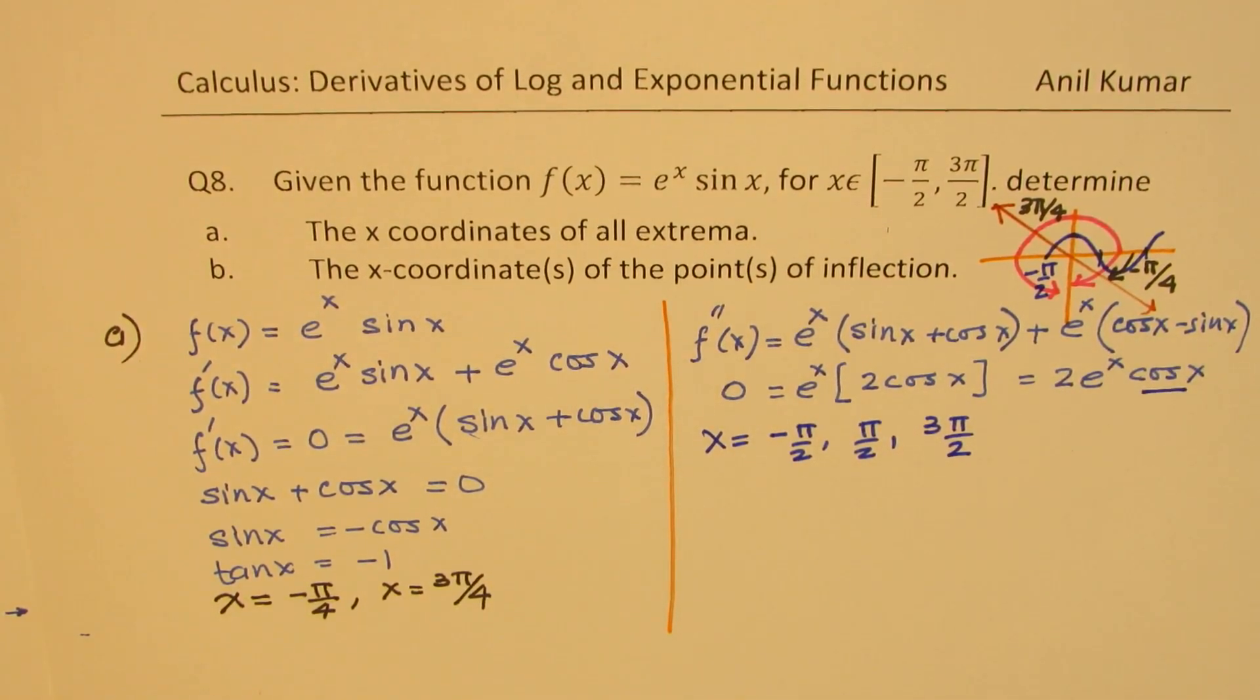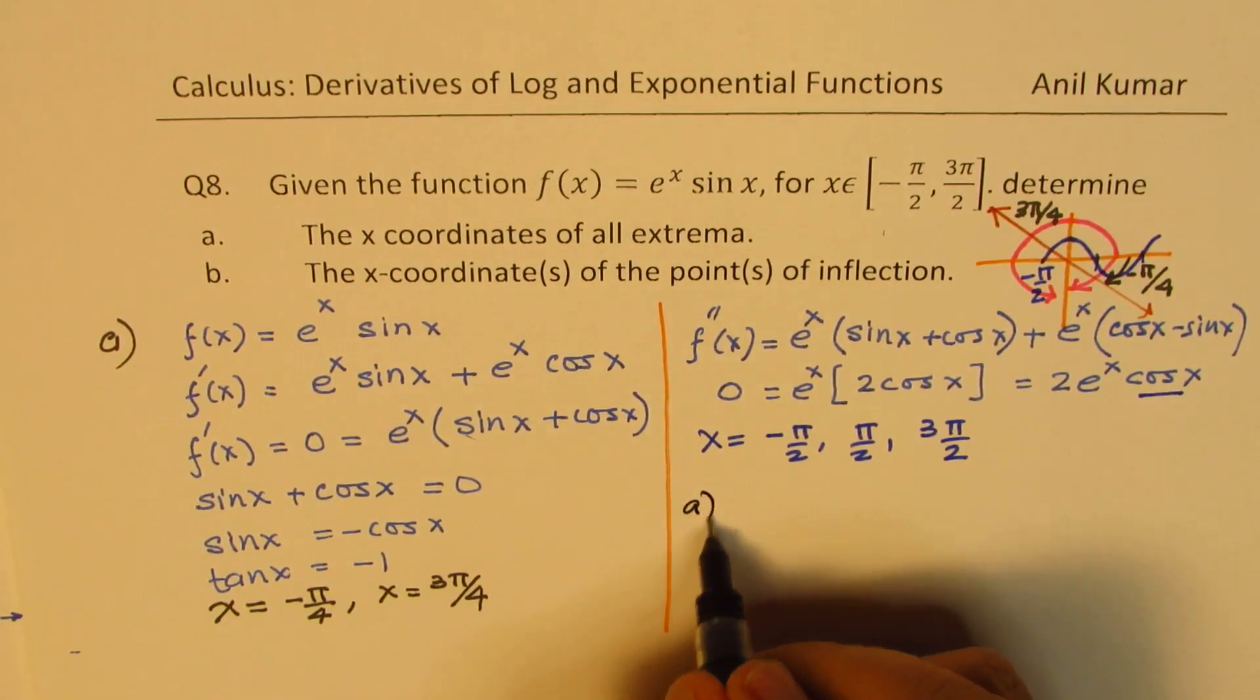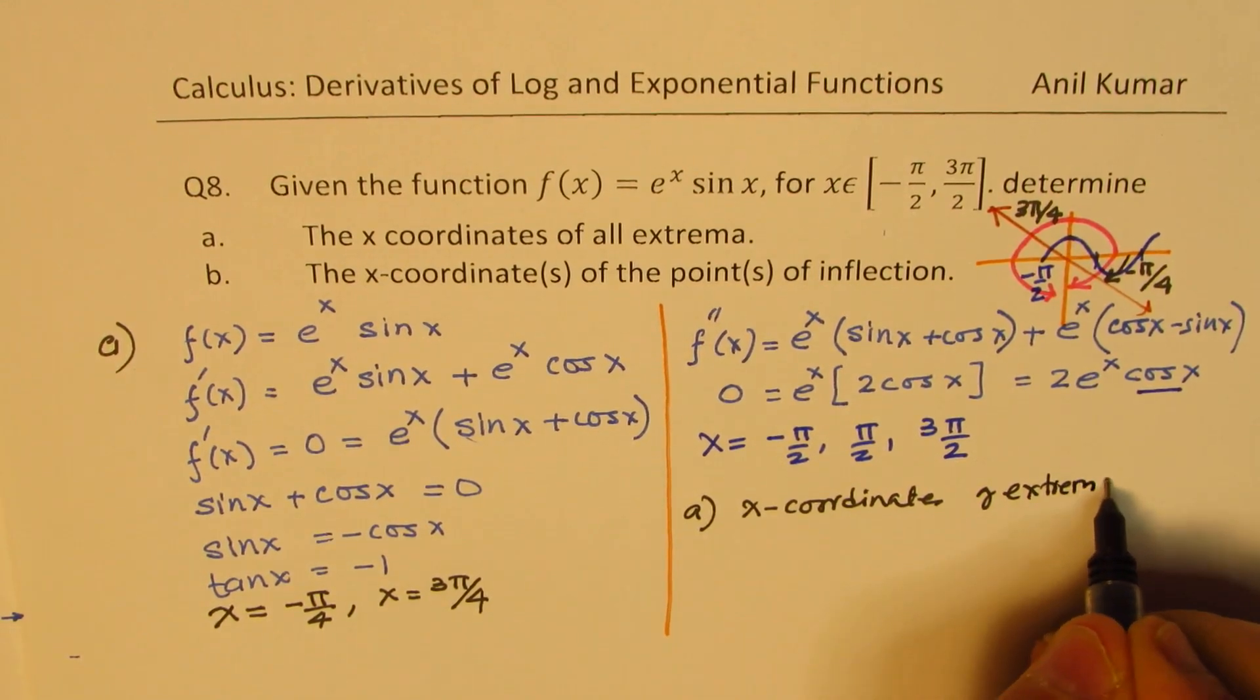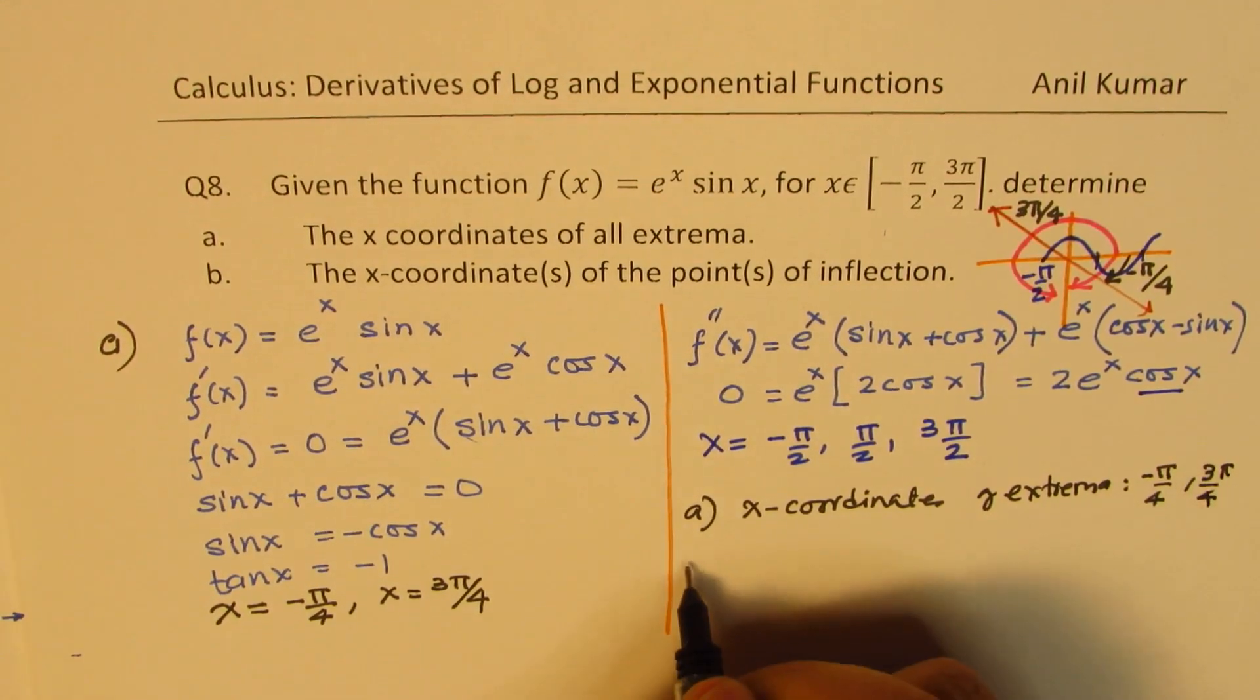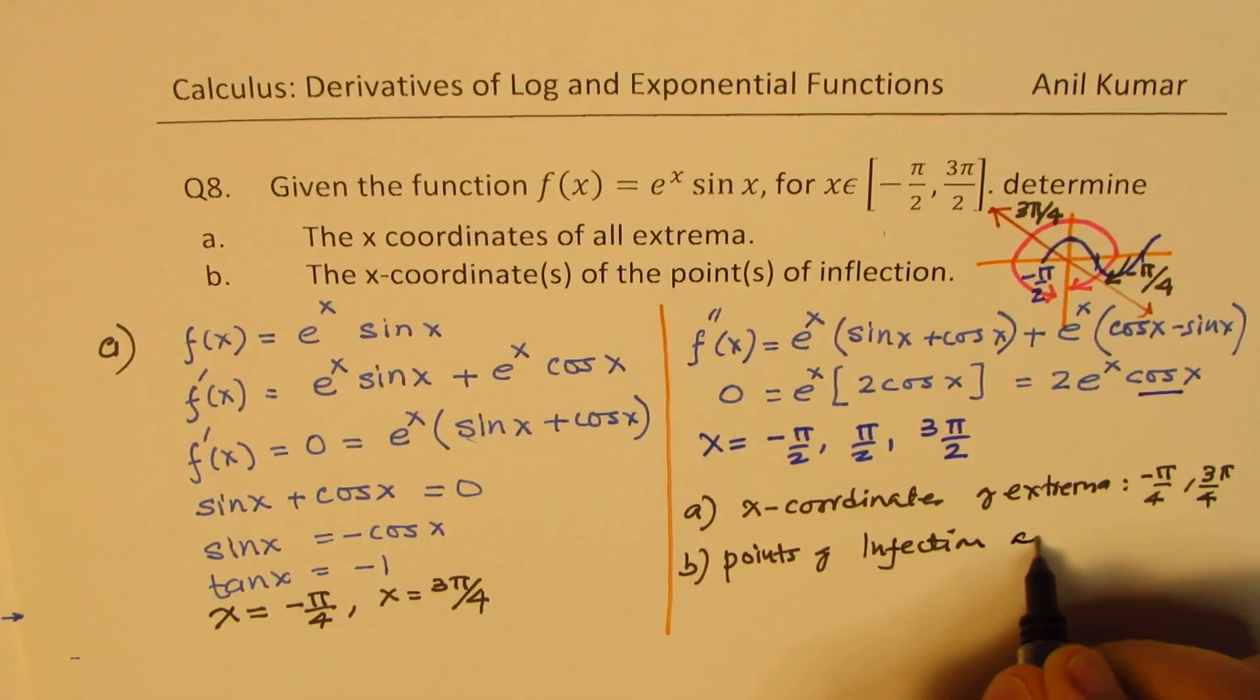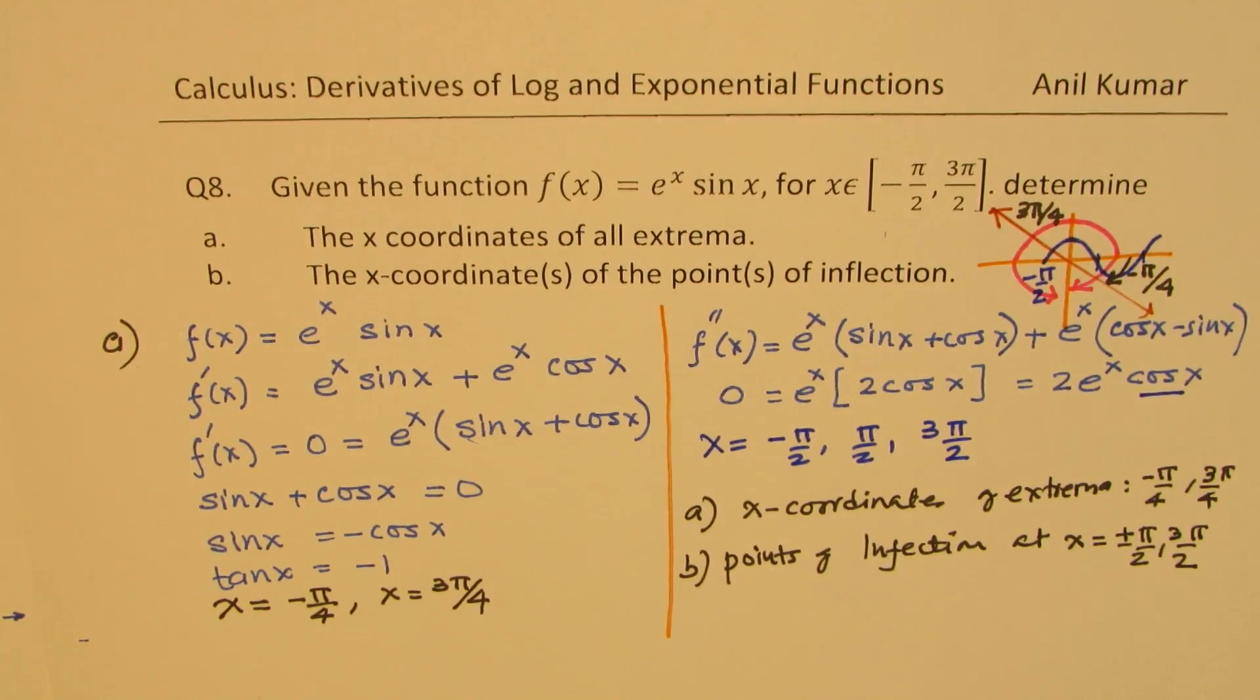So at these 3 points, we can get actually the point of inflection. So with this, we come to an end of this solution. We get part A, which is x coordinates of extrema as minus π/4 and 3π/4. So that is how we can actually solve this particular question.